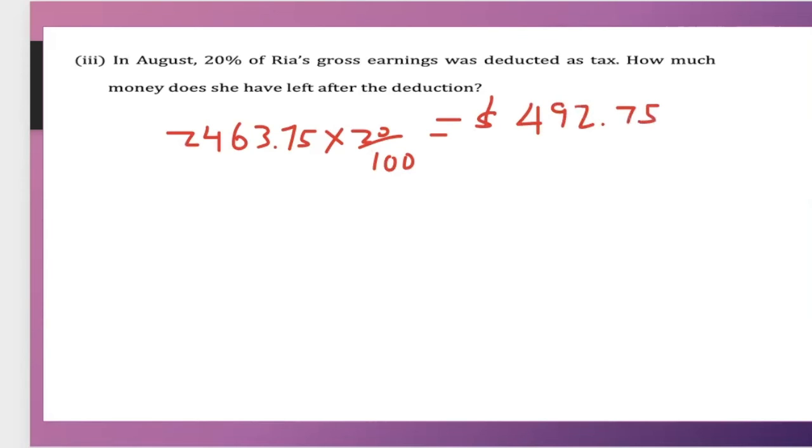So the amount that's left will be $2,463.75 minus $492.75. And we will have $1,971. So this is the amount that Ria received after tax is being deducted.